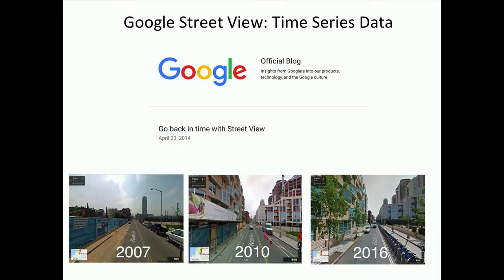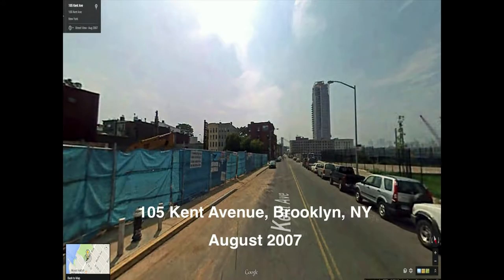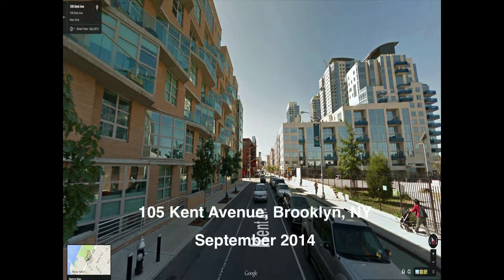The data we use is called the Google Street View Time Machine — time series data of Street View images captured across several years, starting from 2007 all the way to 2016. You have pictures available almost every year of the same place taken from the same viewpoint with consistent image quality. This has really captured urban change across the world. A good example is Brooklyn's Kent Avenue: you see the location in 2007 with construction happening, and the same place in 2014 completely built up with people walking on the street.